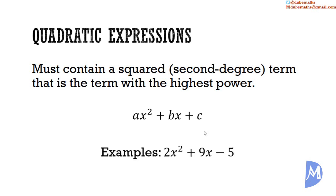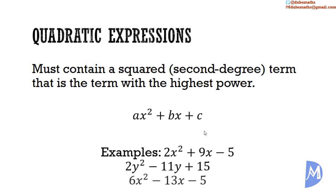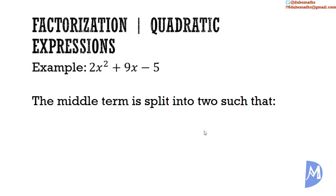Some examples: 2x squared plus 9x minus 5, 2y squared minus 11y plus 15, and 6x squared minus 13x minus 5. The trick in factorizing quadratic expressions is to understand how to split the middle term — the x term — into two, to arrive at four terms that can be factorized by grouping.